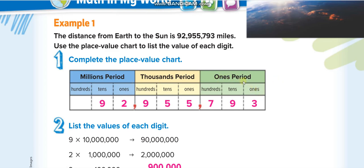When reading place values, for the first period we don't say the name of the period — we just read it as ones, tens, and hundreds. In the thousands period, we do say the name of the period. We don't say the ones period name because it's just ones. So: one thousand, ten thousand, hundred thousand, and one million, ten million, hundred million.